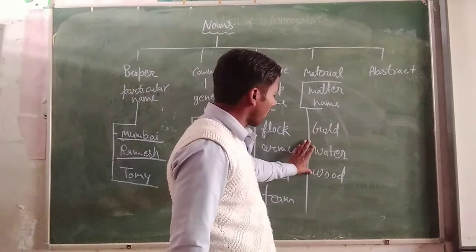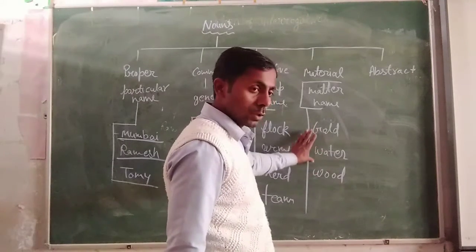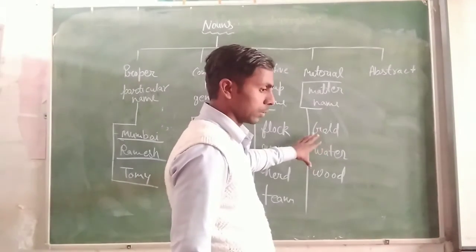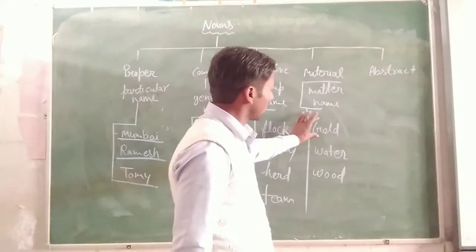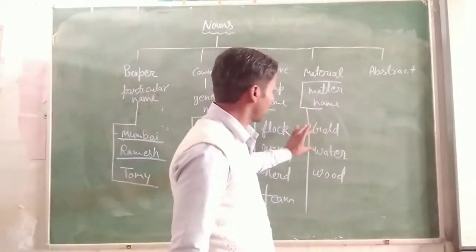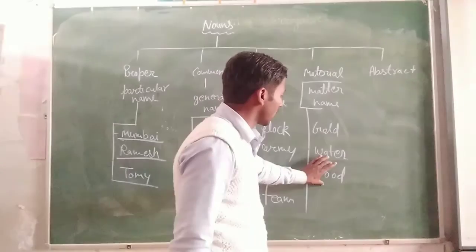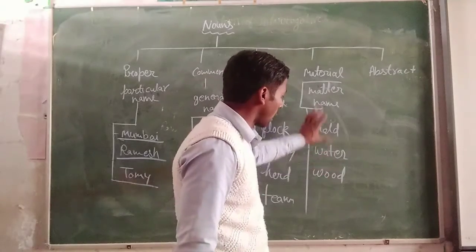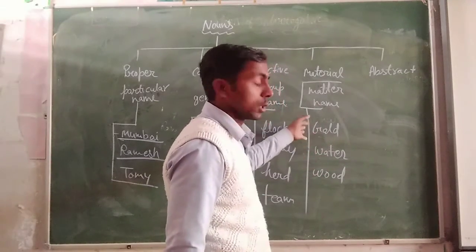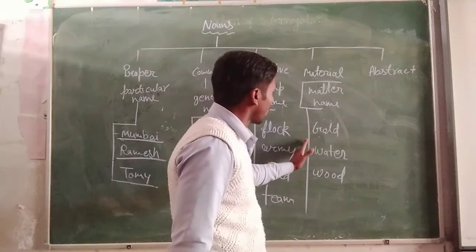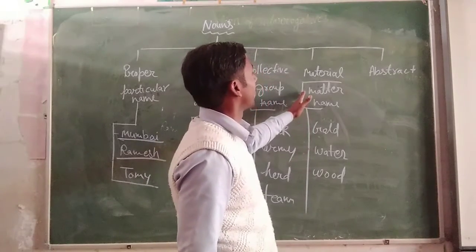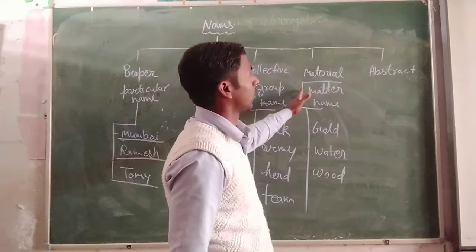These words — like gold, water, wood — are used for the noun. Gold is a noun word, water is a noun word, wood is a noun word. But all these words refer to the material, so we can say that all these words will be material noun.